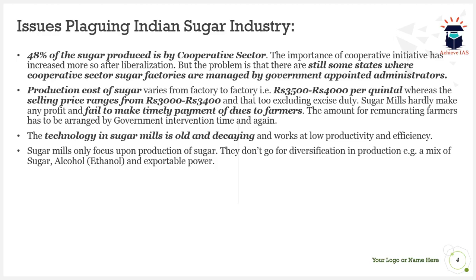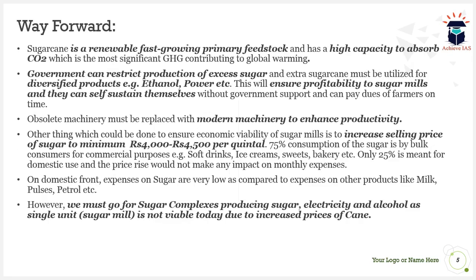The technology in sugar mills is old and decaying, which compromises the productivity and efficiency of the mill. Additionally, sugar mills focus only on the production of sugar and do not go for diversification. As in Brazil, where farmers produce ethanol and earn huge profits, Indian sugar mills produce only sugar, which is not profitable. There is no diversification into a mix of sugar, alcohol, and power — electricity that can be produced from sugarcane biomass.